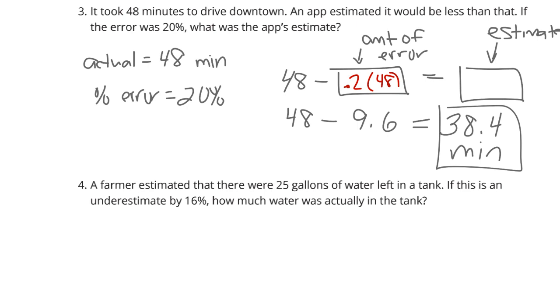Question four. A farmer estimated that there were 25 gallons left in the tank. If this was an underestimate by 16%, how much water was actually in the tank?